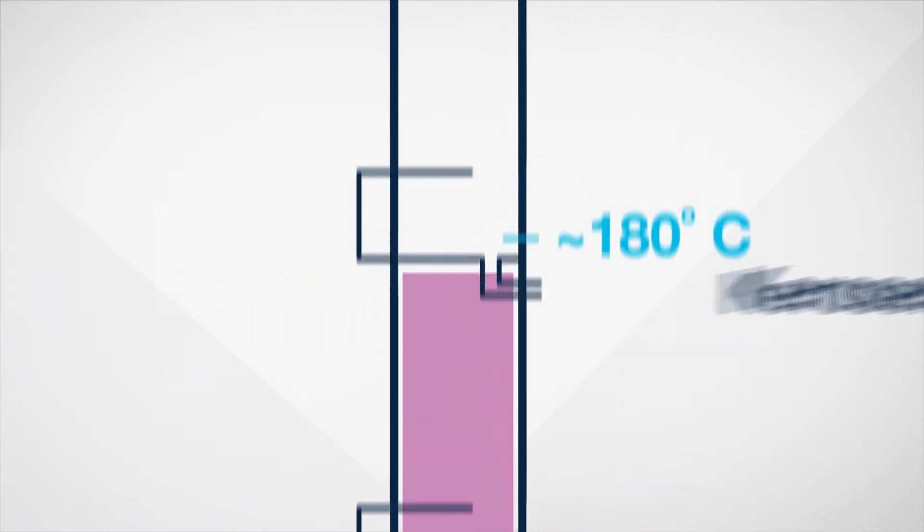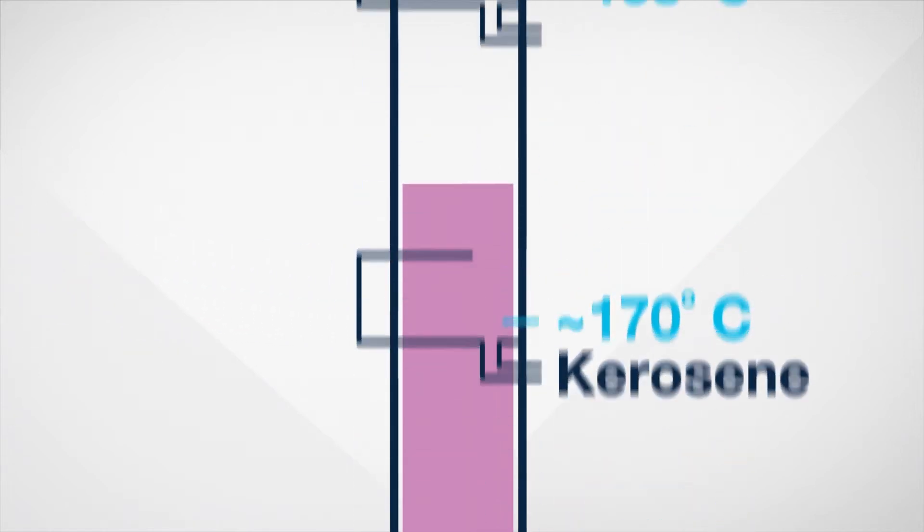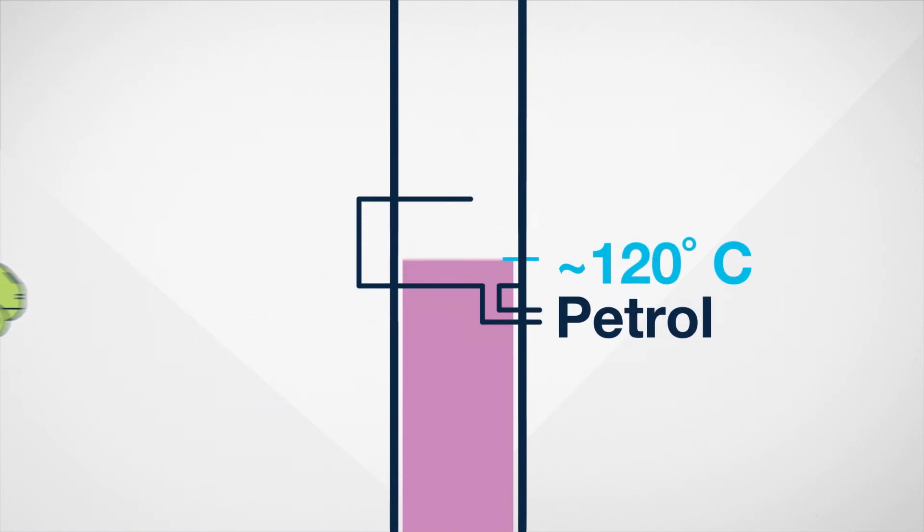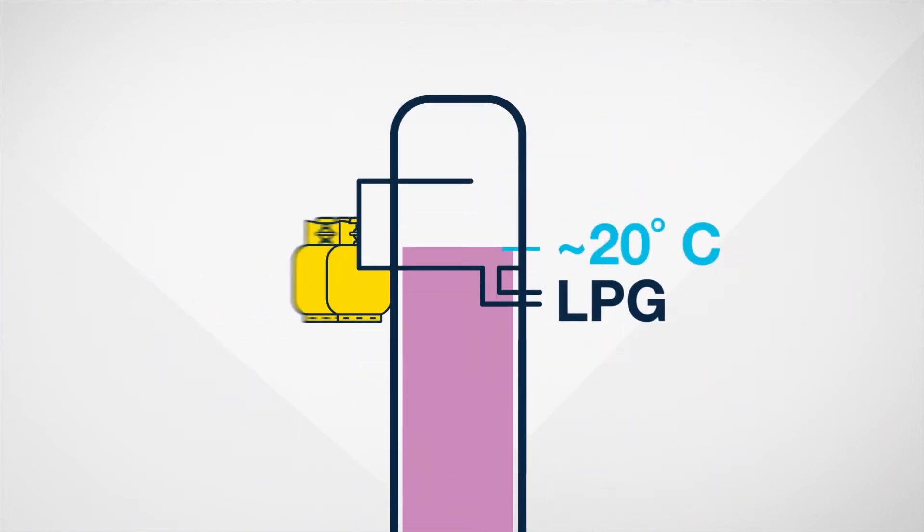As products condense into various liquids, they're collected on trays, while the lightest gases rise to the top and are extracted for LPG.